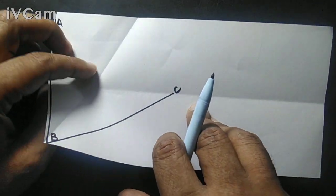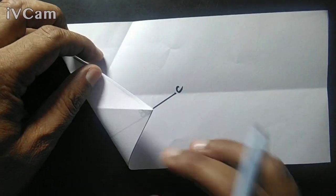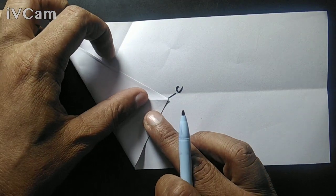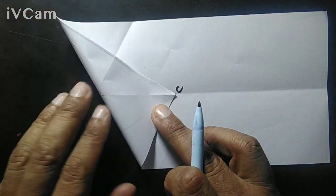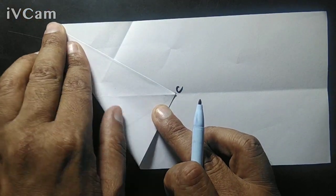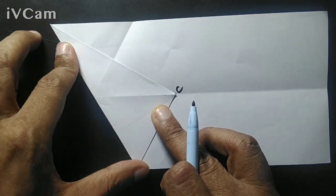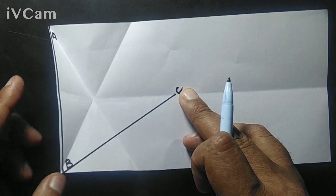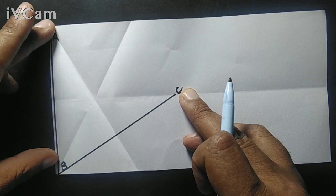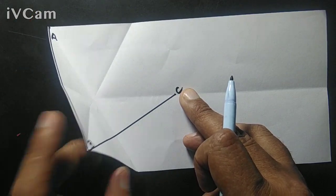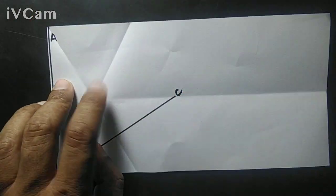Again we fold the rectangle. We take the point B and let it coincide with C. And by symmetry it turns out that AB equals AC. Let's join AC.